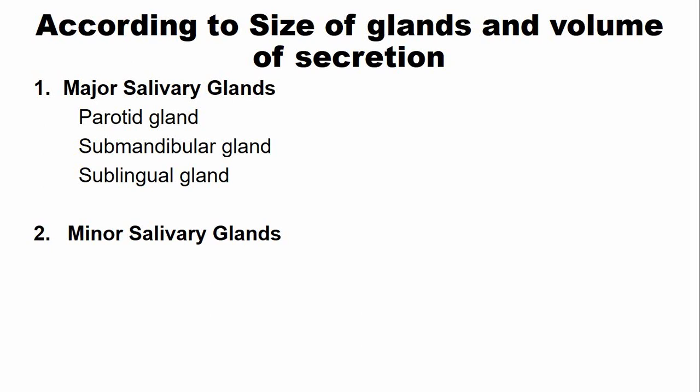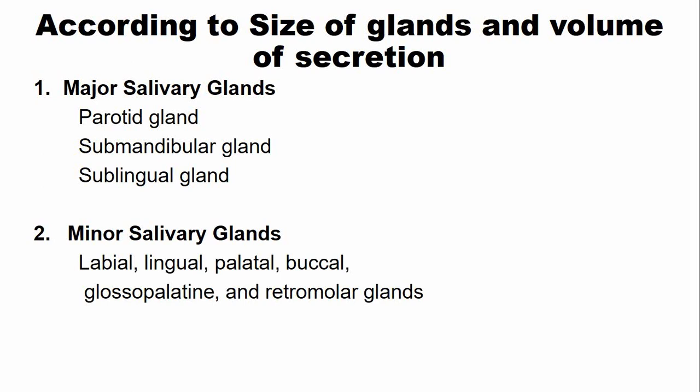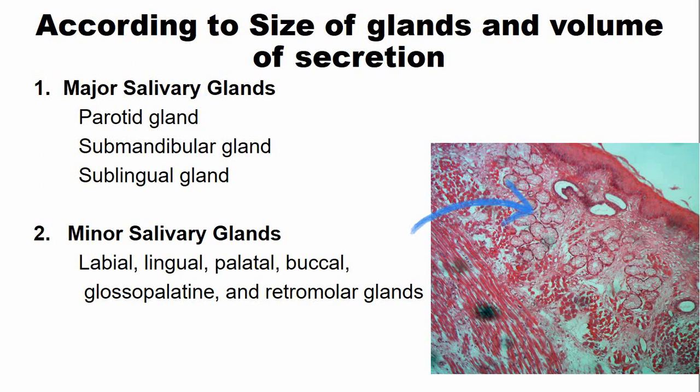The other glands are known as the minor salivary glands. The minor salivary glands are numerous — around 500 to 1,000 — and they are present in the oral cavity in different locations, for example labial, lingual, palatal, buccal, and retromolar glands. They have short ducts, as opposed to the major salivary glands, and those short ducts open onto the mucosal surface. These glands are present just below the epithelium.